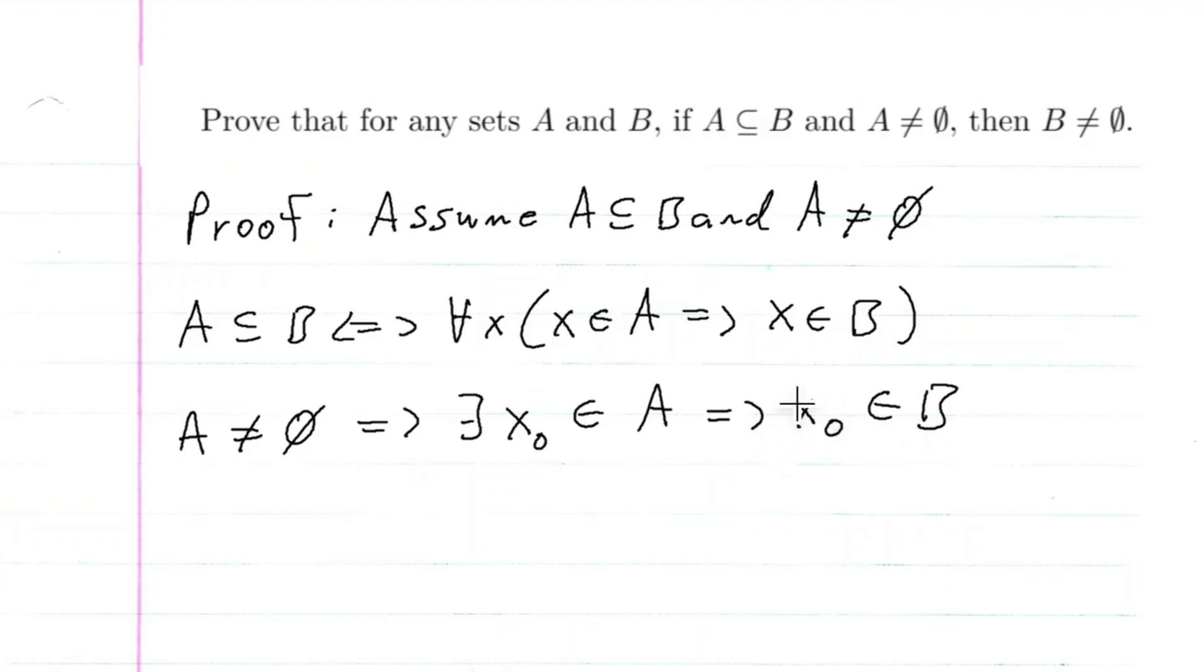So if this X_0 is in B, this means that B must not be empty. And that is the proof.